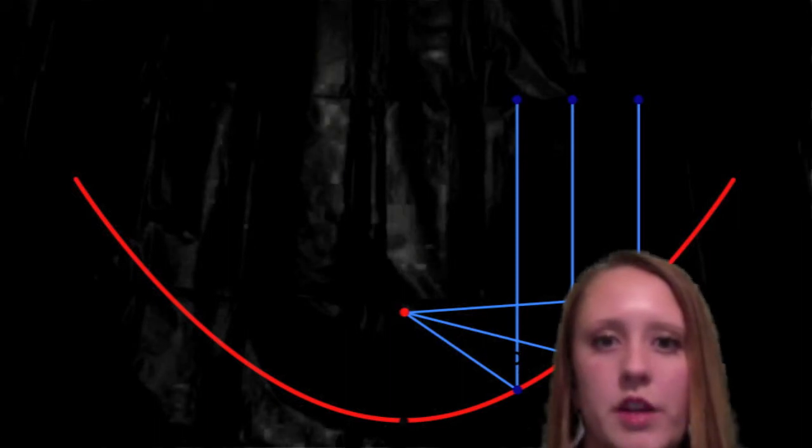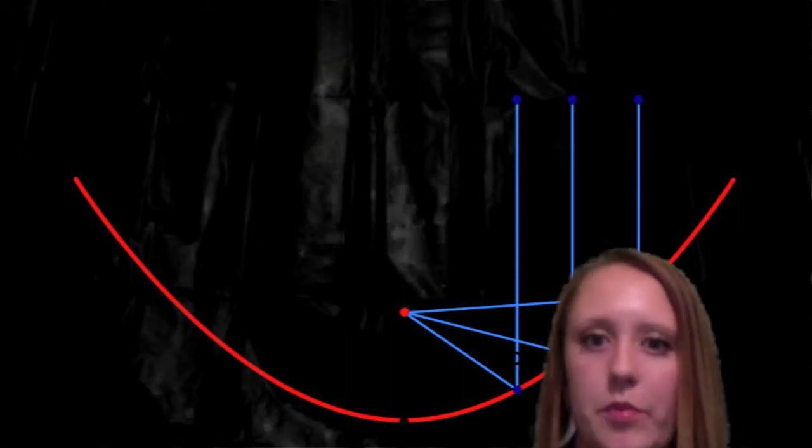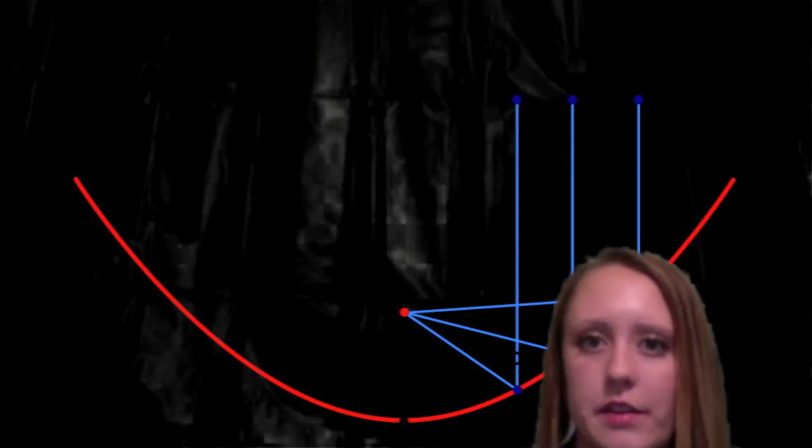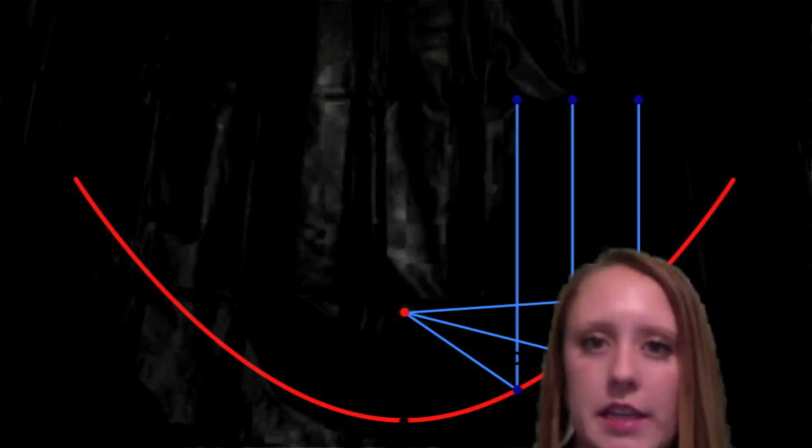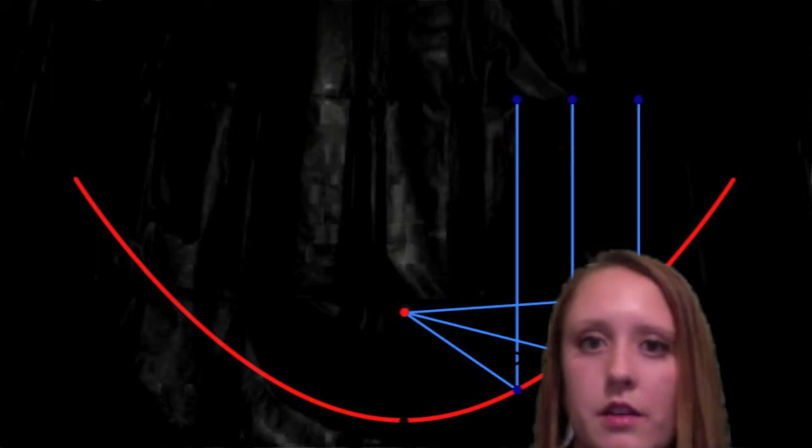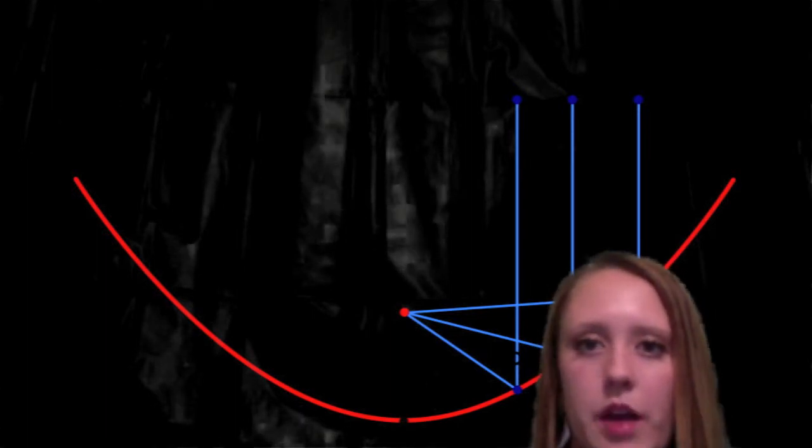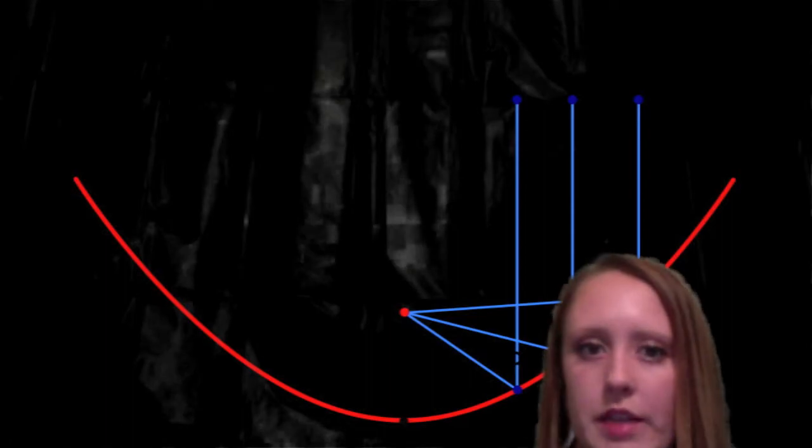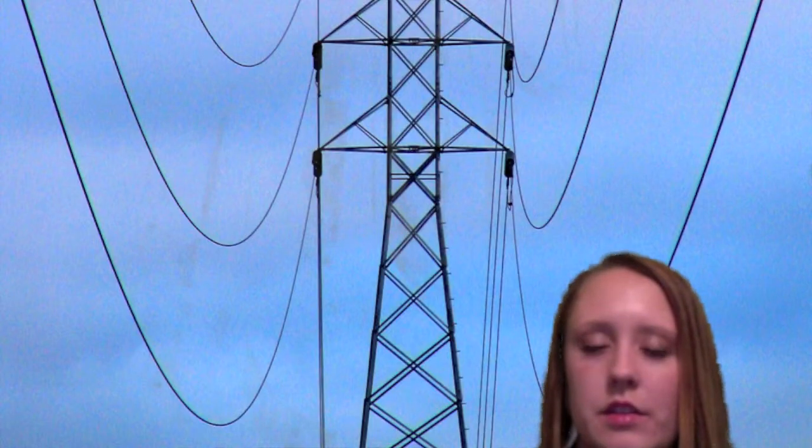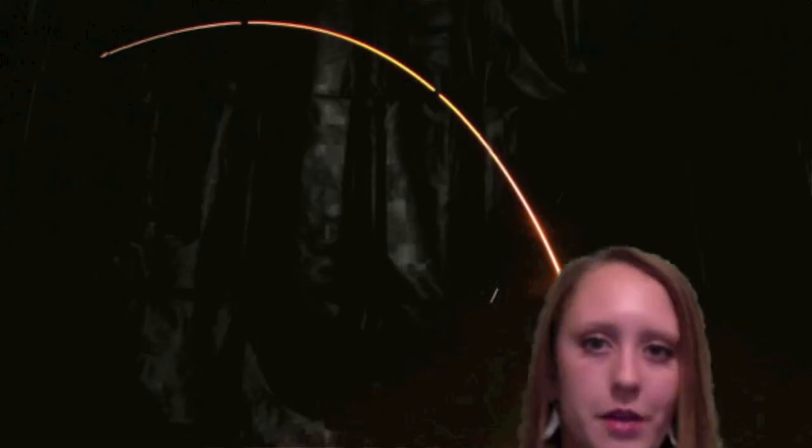The graph of a quadratic function is a parabola, an example of which is shown on the screen here. Parabolas can be seen in many places in our everyday lives if one simply knows where to look. Both nature and man-made inventions can showcase parabolas. From archways to power lines, to roads, to water drops, and even to rockets, parabolas are all around us.